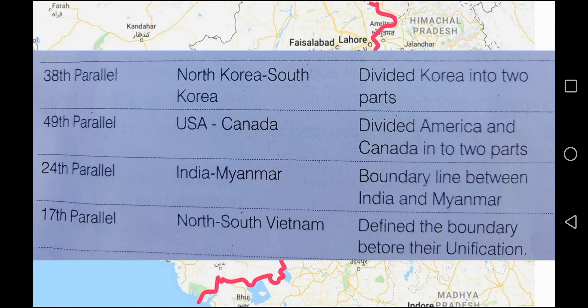The 49th Parallel divided America and Canada into two parts. The 24th Parallel is the boundary line between India and Myanmar. The 17th Parallel is between North and South Vietnam, and defined the boundary before their unification.